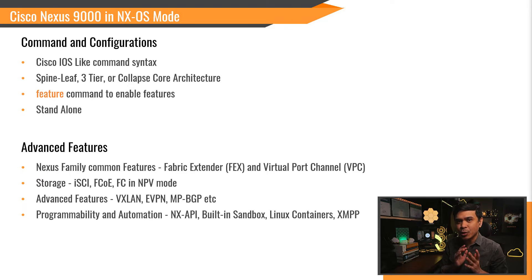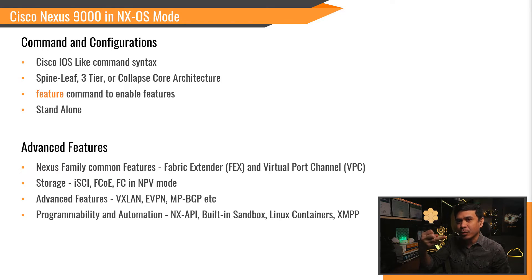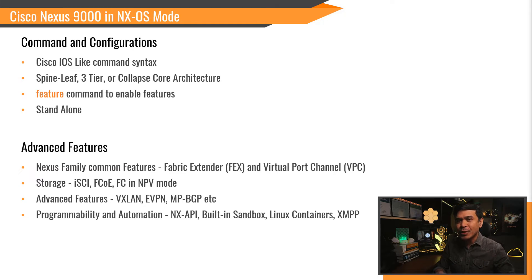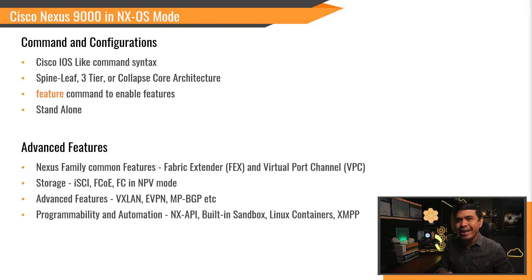Here are the advanced features for Cisco Nexus 9000. All Nexus family switches share common features: we have Fabric Extender (FEX) and Virtual Port Channel (VPC). Most Nexus switches also have storage features. For Cisco Nexus 9000 specifically, we have iSCSI, FCoE, and FC — with both FC and FCoE available in NPV mode only.